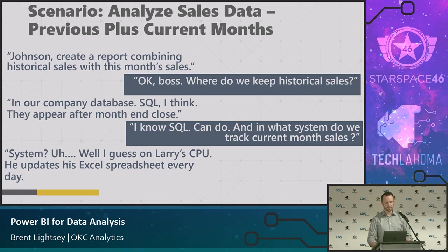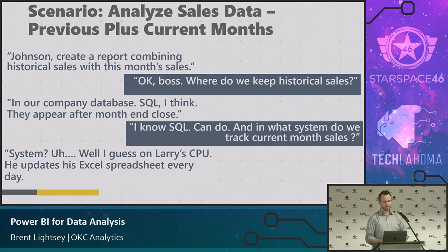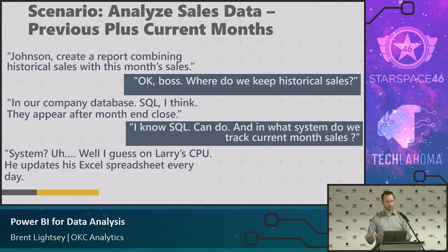You can break this into four overall steps: connect to SQL to get the previous data (the easiest part), pull current month sales out of Excel, use Power Query to combine that information, and import another data source that recategorizes the items we sell. When you see that fourth step, you'll probably recognize having to do something similar in your own work.